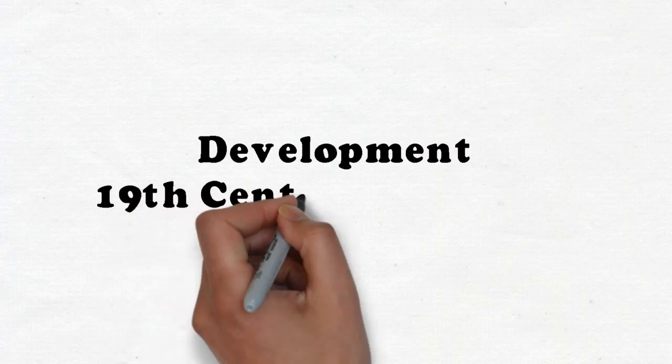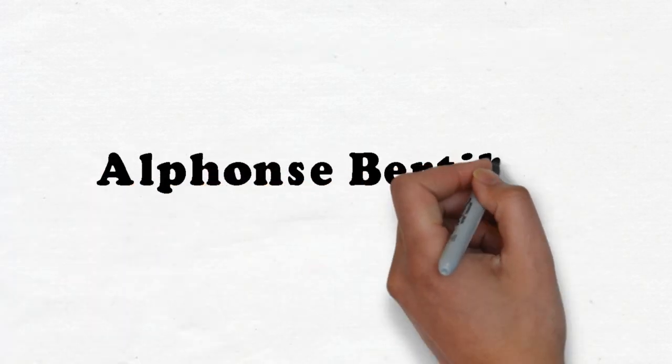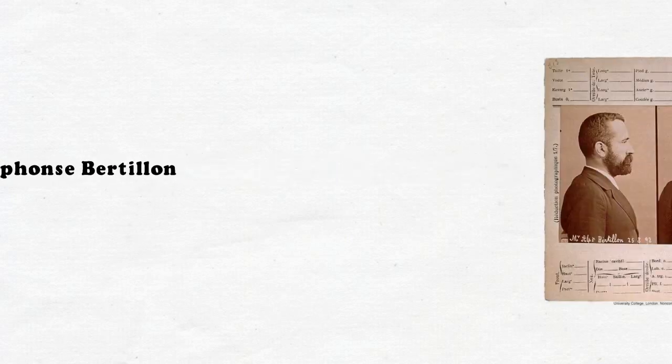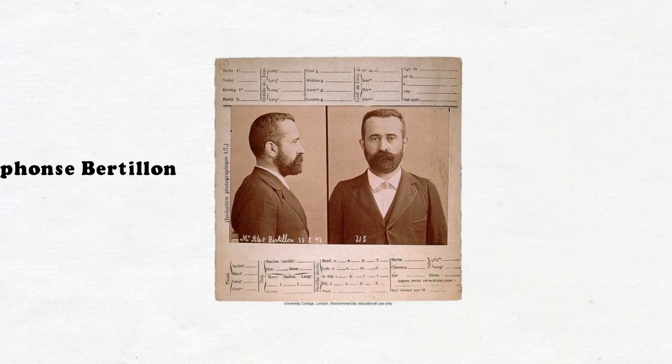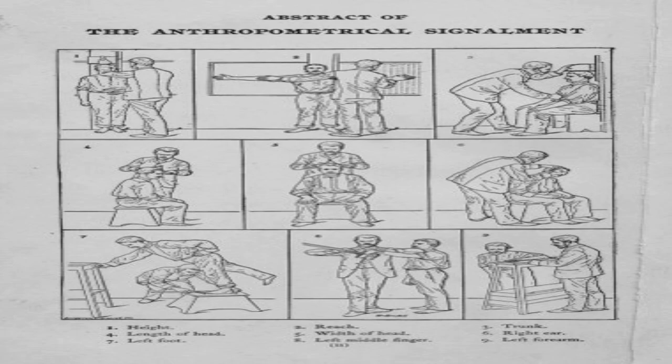Most of the development in forensic science took place from the 19th century onwards. Alphonse Bertillon, a French police officer, developed the science of anthropometry. It was the first systematic method for the identification of suspects and criminals.